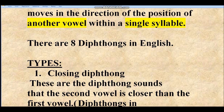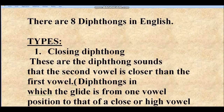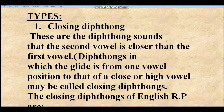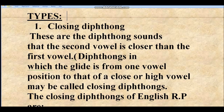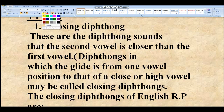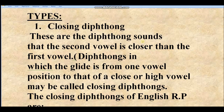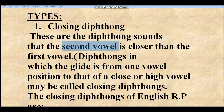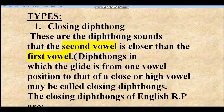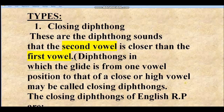As we all know, there are eight diphthongs in English, and they are classified into different types. The first classification is closing diphthongs. Closing diphthongs are sounds where the second vowel is closer than the first vowel. Diphthongs in which the glide is from one vowel position to that of a close or high vowel may be called closing diphthongs.